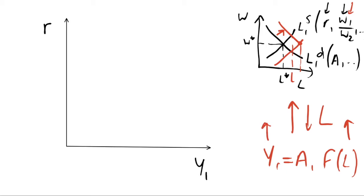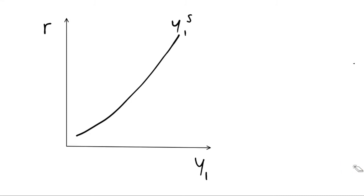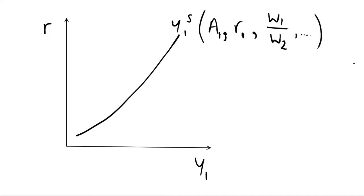We can use this labour market equilibrium to derive a supply curve in our goods market, and we're going to call that Y1 supply. So we have this supply function Y1 supplied, and this is going to depend on our labour market equilibrium: it depends on the productivity parameter a1, the interest rate in period one r1, and the relative wage rates in period one and two. We could have other factors but we're not going to focus on those as they are secondary to this model.